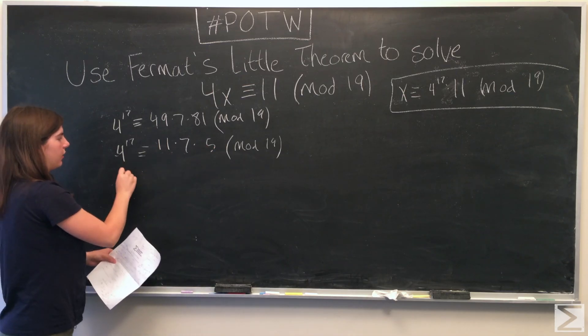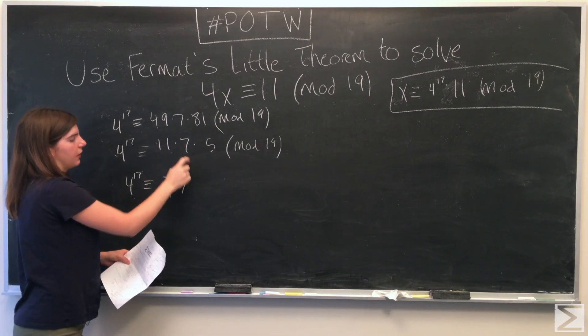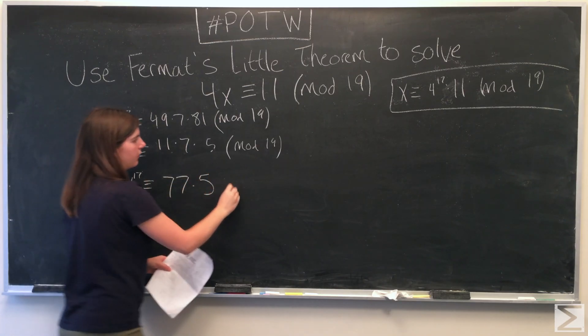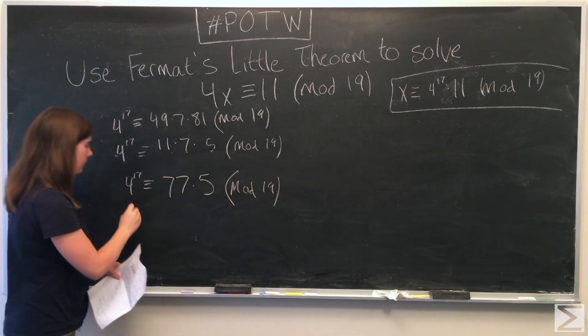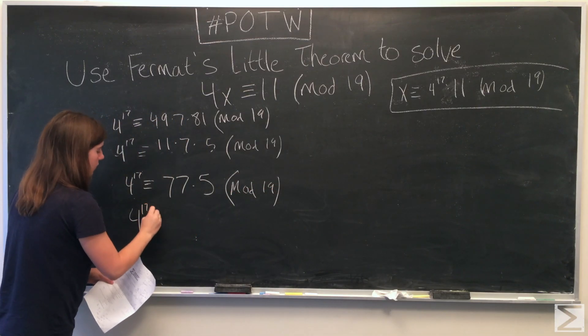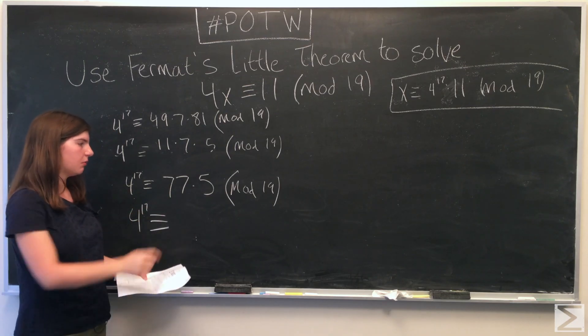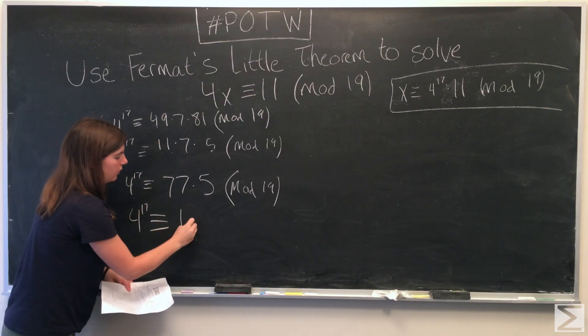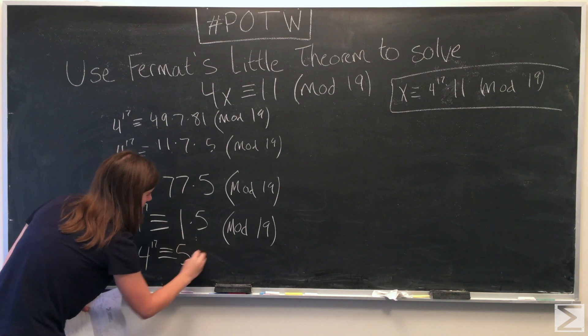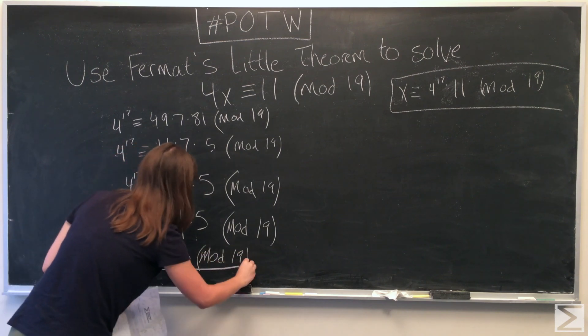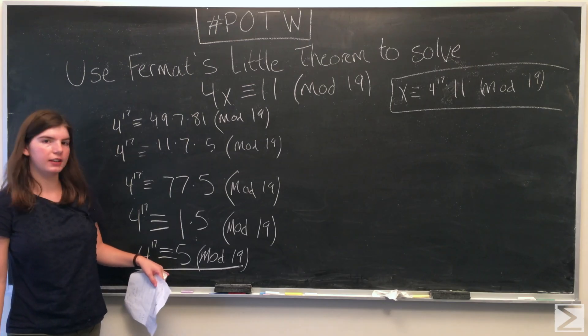I will just reduce this to write 11 times 7 is 77 times 5. And then when 77 is divided by 19, there's a remainder of 1. So now we've reduced it to 4 to the 17th is congruent to 5 modulo 19.